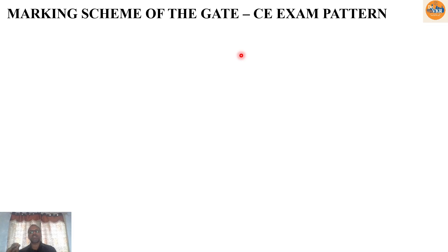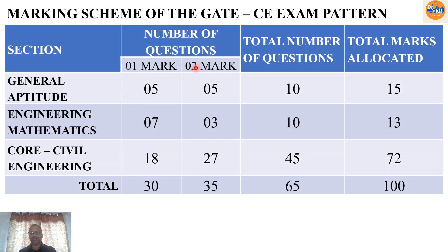The marking scheme for the GATE CE exam: there are one-mark and two-mark questions, totaling 65 questions carrying 100 marks in 3 hours. Out of 65 questions, 35 are two-mark questions (35 × 2 = 70 marks) and 30 are one-mark questions (30 × 1 = 30 marks). For General Aptitude: 5 one-mark + 5 two-mark = 10 questions = 15 marks. For Mathematics: 7 one-mark + 3 two-mark = 10 questions = 13 marks. For Civil Engineering core: 18 one-mark + 27 two-mark = 45 questions = 72 marks. Total: 65 questions, 100 marks, 3 hours.